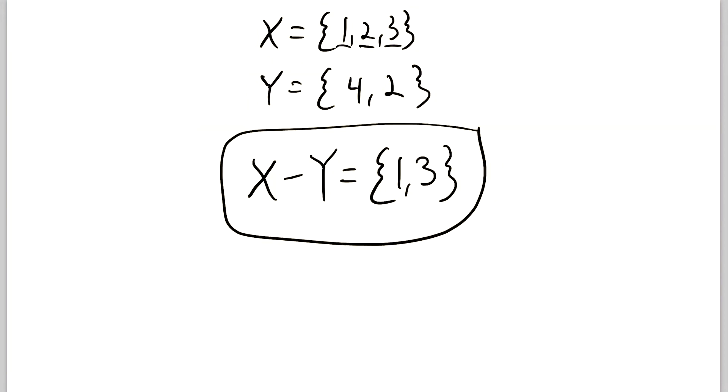So X minus Y can't contain any elements of Y because we subtracted Y out of the set X. Also, I want to quickly mention that you'll sometimes see X minus Y written like this. Just be aware that that's another notation that's commonly used. But now let's get into the Venn diagrams.